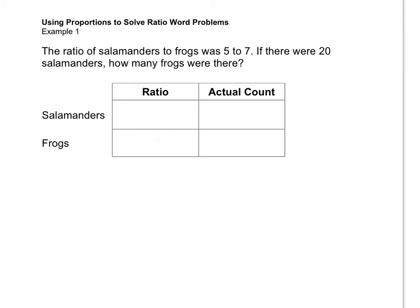The ratio of salamanders to frogs was 5 to 7. If there were 20 salamanders, how many frogs were there? So the ratio numbers are 5 and 7. We have an actual count of the number of salamanders, but we don't know how many frogs there are, so we're going to use the letter F to represent the frogs.